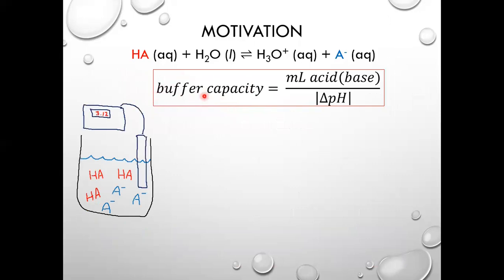To quantify buffer capacity, I need to keep track of how much strong acid or strong base I've added. I'll do that by delivering the strong acid and later the strong base using a burette. I also want to keep track of the pH changes. Because we expect these pH changes to be relatively small, we'll need to use something more precise than pH indicators, so we'll use a pH meter. During our experiment we'll have a pH electrode immersed in our solution and be able to read the pH in real time.